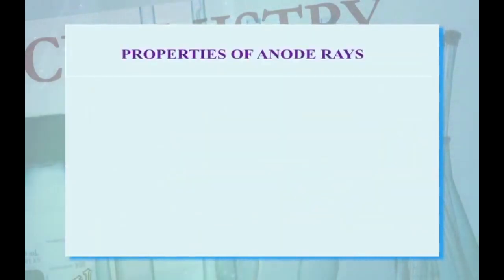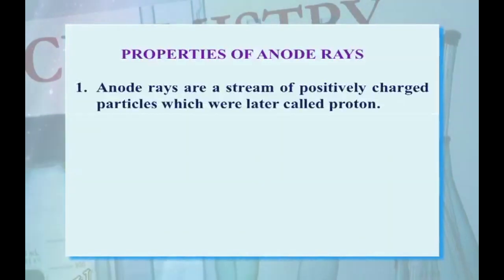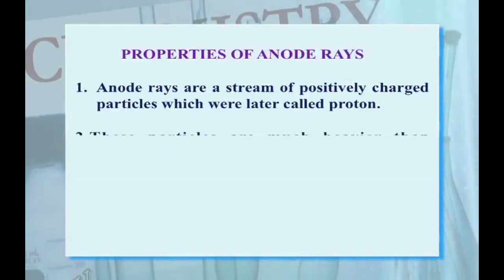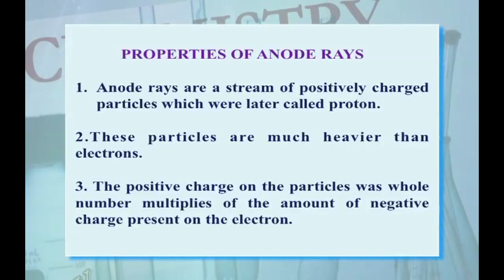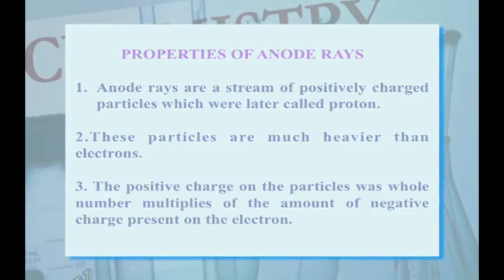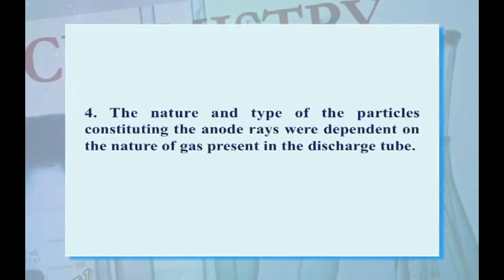Properties of anode rays: first, they are a stream of positively charged particles which were later called protons. Second, these particles are much heavier than electrons. Third, the positive charge on the particles was a whole number multiple of the amount of negative charge present in the electron. Fourth, the nature and type of particles constituting the anode rays were dependent on the nature of gas present in the discharge tube.